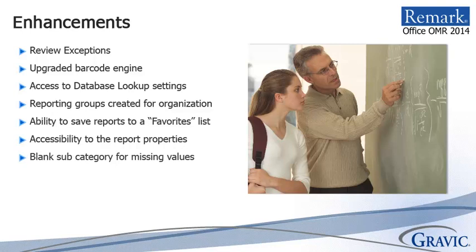A new subcategory was added for blank responses to separate them from multiple responses. As a result, two types of missing value categories are now generated to distinguish between the two. The Grade Wizard has been renamed Advanced Grade and revamped so that you no longer have to click through the entire wizard to access the properties you need.